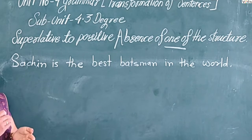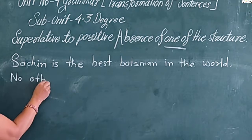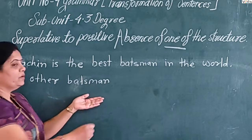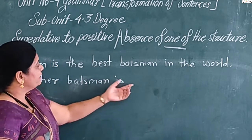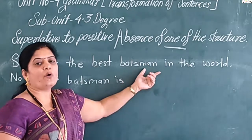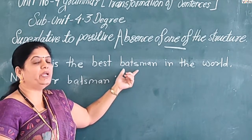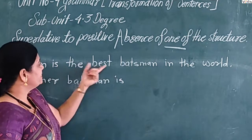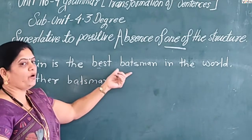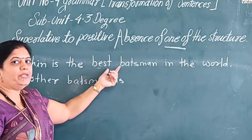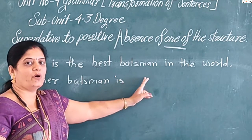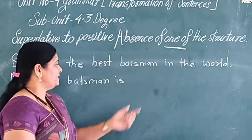We start this sentence with 'no other', then the common noun, then the word 'is'. Then we take the positive form of the adjective between 'as' and 'as'. In this sentence, the superlative form of the adjective is 'best', and the positive form of 'best' is 'good'. So we place the positive form of the adjective between 'as' and 'as'.